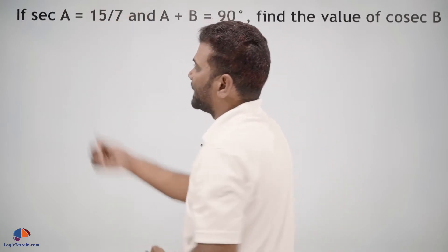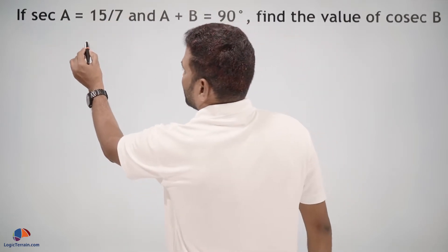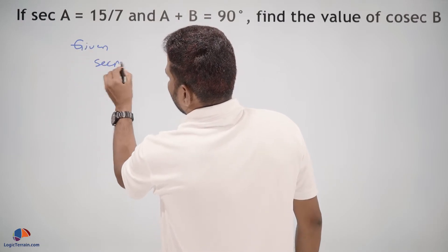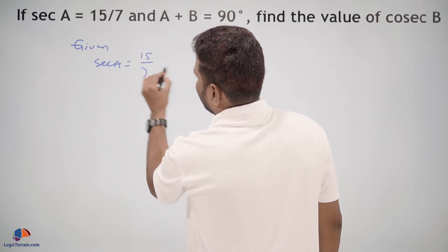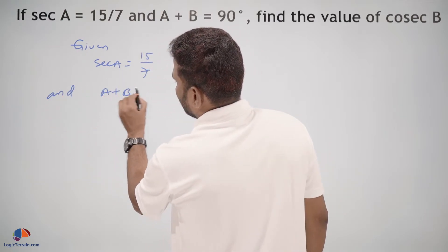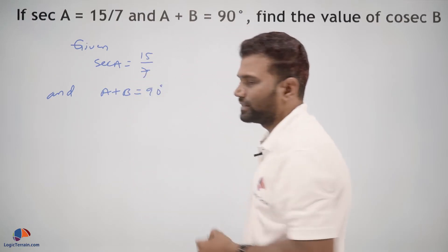So we have given sec A, that is 15/7, and A + B = 90°.